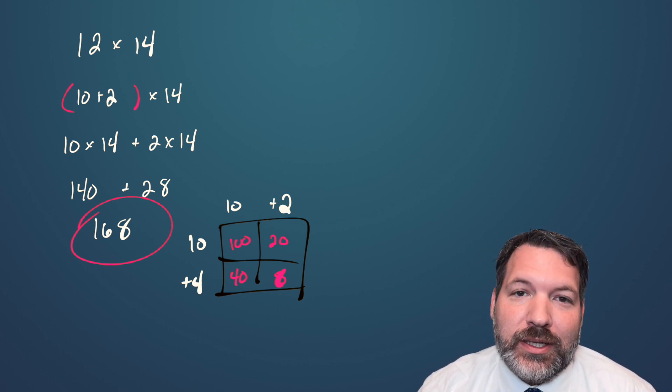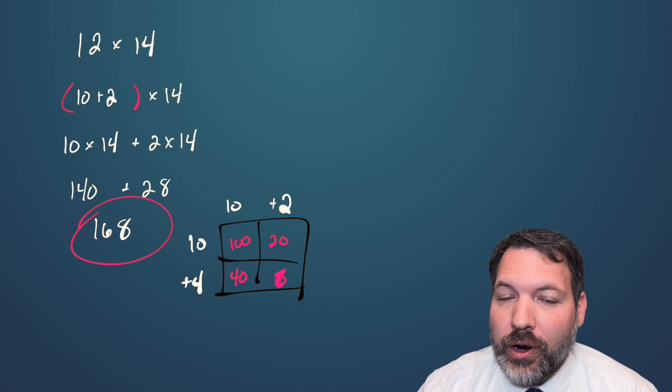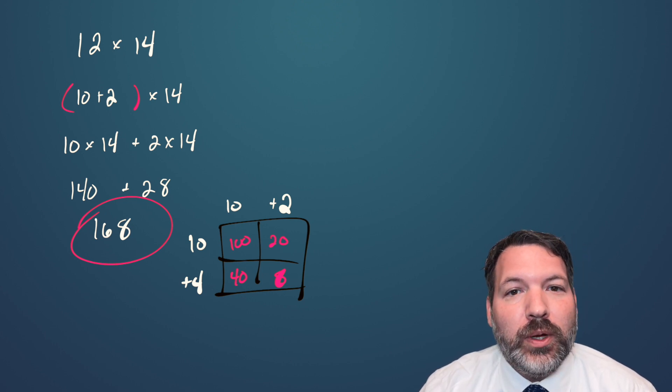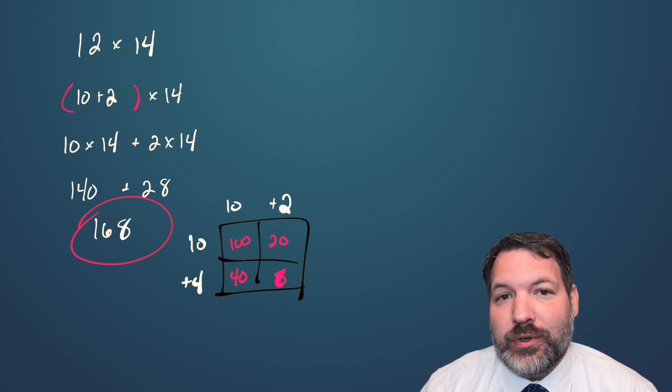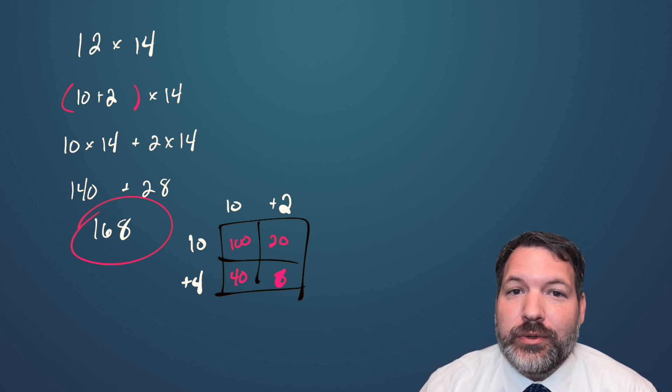As many people are fond of pointing out, the area model also doesn't necessarily scale super well. There are clever ways to use it, but typically, once we start multiplying larger and larger numbers, we're just going to use a calculator. If we have to do it by hand for some reason, we're probably just going to use the standard algorithm.